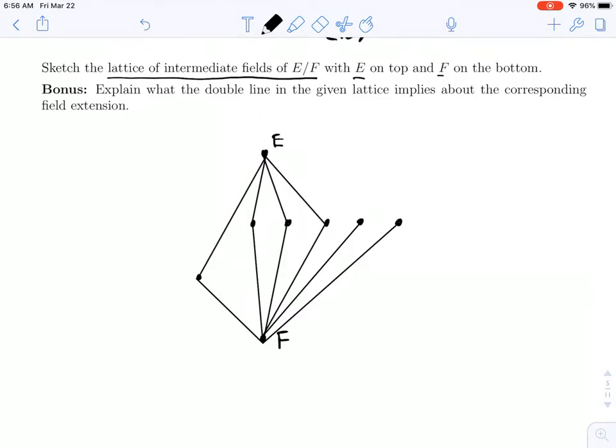So that's really slick, right? We know immediately what the intermediate field lattice is going to look like just by knowing the lattice of subgroups.